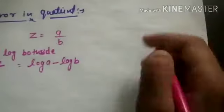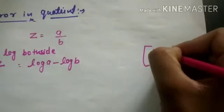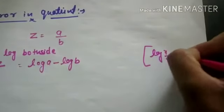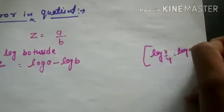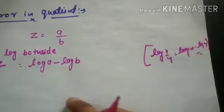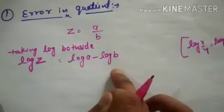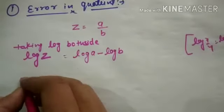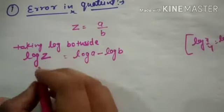Because we know that log(X/Y) equals log X minus log Y. So we can apply this formula here, and we'll get log Z equals log A minus log B.